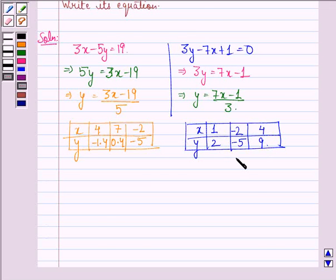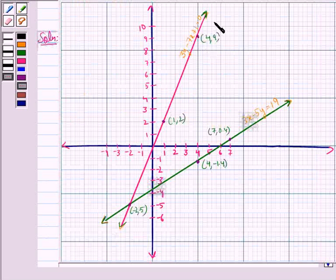Let us plot these points on the graph and make these two lines. On solving these two equations, we get the point of intersection as minus 2, minus 5.